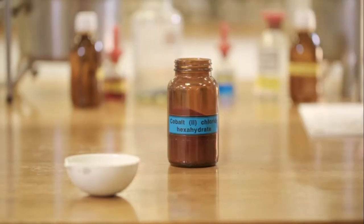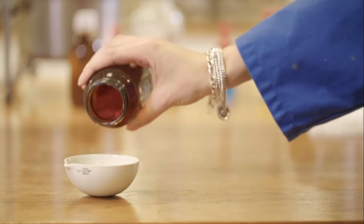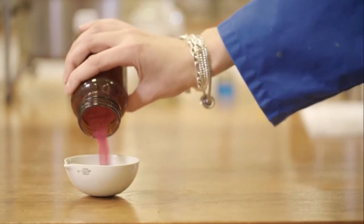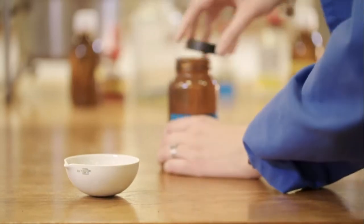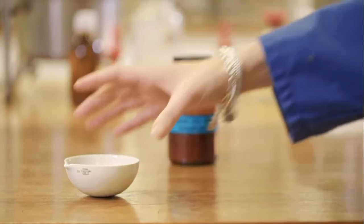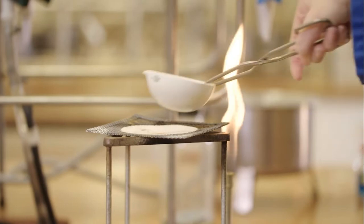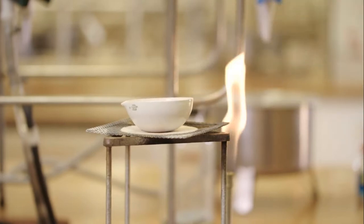First, hydrated cobalt chloride is put into an evaporating dish. This cobalt chloride is then heated using a Bunsen burner.